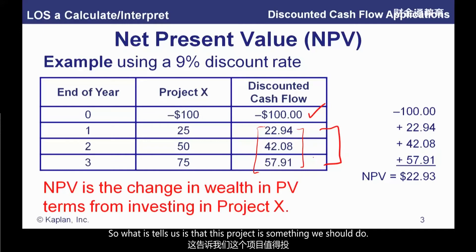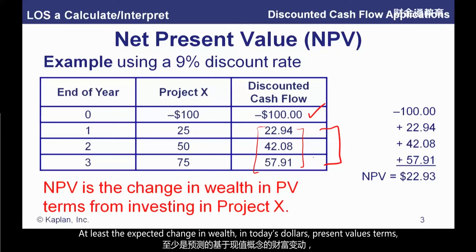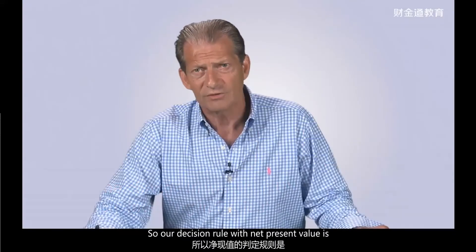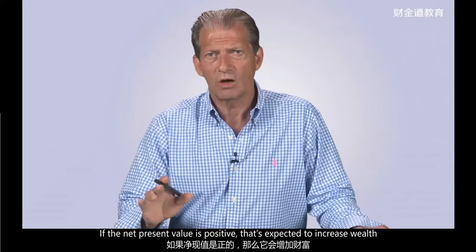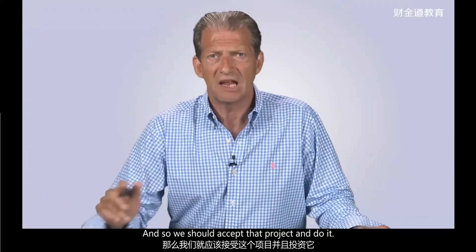That's positive, so it tells us this is a project we should do — the present value of the future cash flows is greater than the initial outlay. We can think of net present value as the expected change in wealth in today's dollars from investing in this project. Our decision rule: if the net present value is positive, that's expected to increase wealth or increase the value of the firm, so we should accept that project and do it.